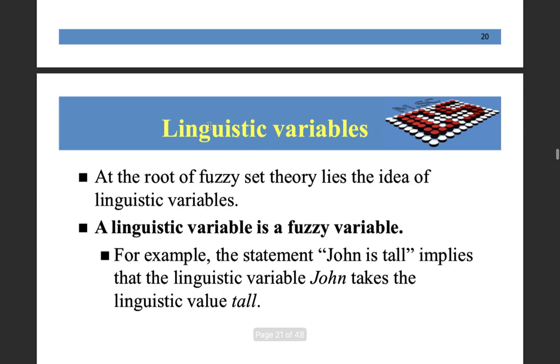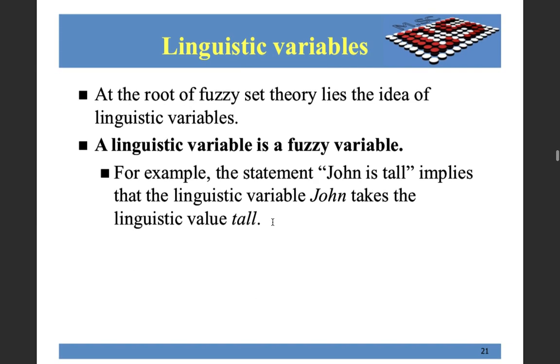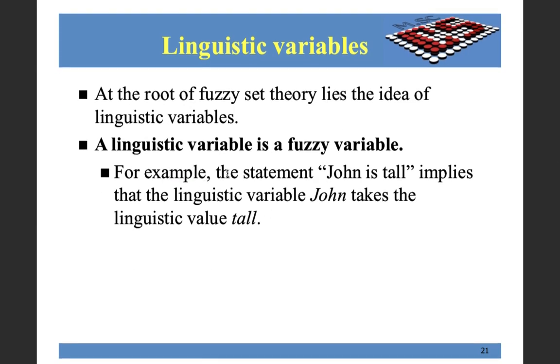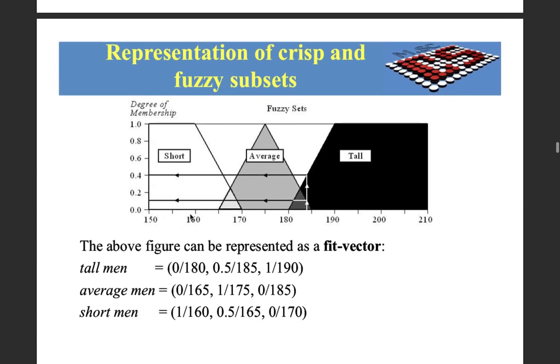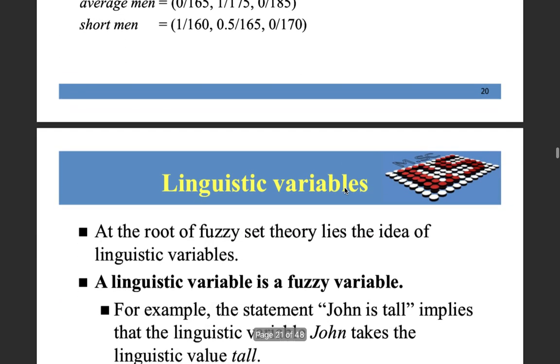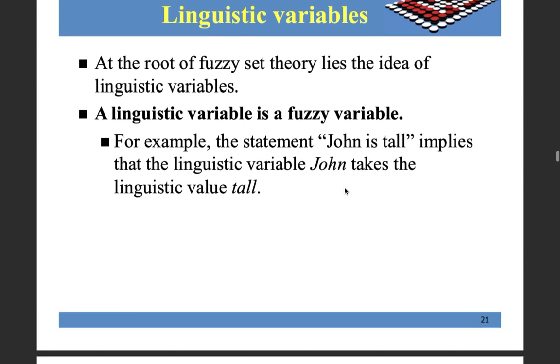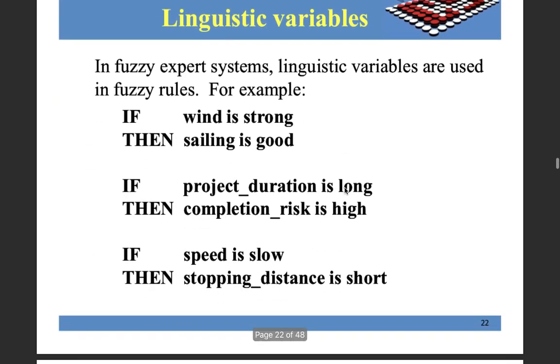So what we try to do is we assign linguistic variables. In our input, we try to distinguish them, give a range to them in terms of linguistic. Like here we did, for 150 to 170, person is short. For 165 to 185, the person is average. And for 180 to 210, the person is tall. We try to explain input variables in terms of linguistic variables.